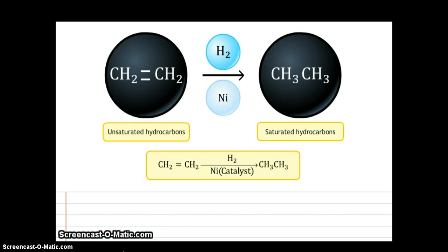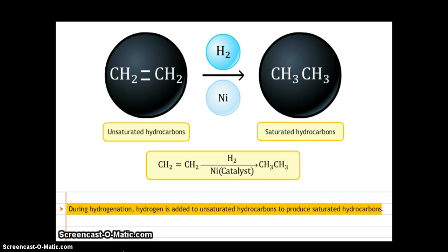Hydrogenation is a chemical reaction that results in addition of hydrogen. In this addition reaction, hydrogen is added to unsaturated hydrocarbons in the presence of a catalyst to produce saturated hydrocarbons.